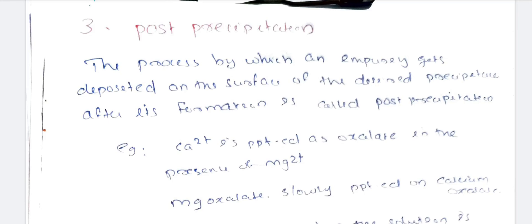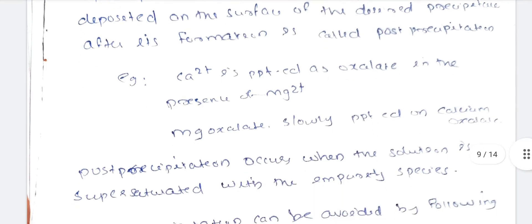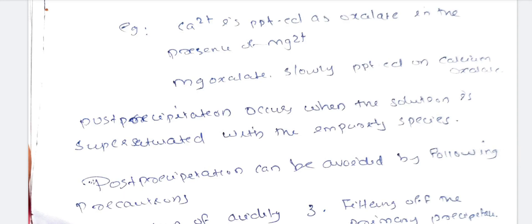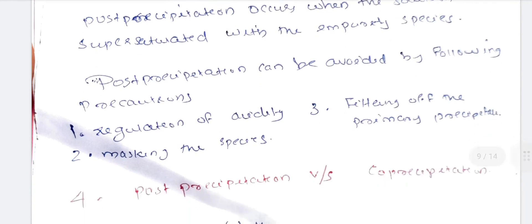Post-precipitation: the process by which an impurity gets deposited on the surface of a desired precipitate after its formation is called post-precipitation. For example, Ca2+ is precipitated as oxalate in the presence of magnesium — magnesium oxalate slowly precipitates on calcium oxalate. Post-precipitation occurs when the solution is supersaturated with the impurity species. It can be avoided by regulation of acidity, masking of the species, and filtering the primary precipitate promptly.